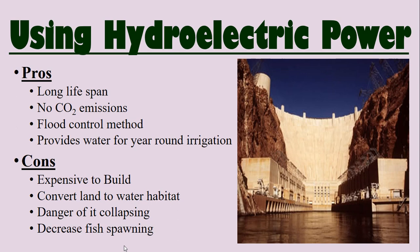The cons of hydroelectric power: they're expensive to build. You also have to convert land to a water habitat — the land behind the dam gets flooded. There's the danger of the dam collapsing and flooding downstream. And there's a decrease in fish spawning, since fish like salmon go upriver to spawn and can't get past the dam. One solution is fish ladders, which allow fish to go up and around the dam so they don't go into the turbine.